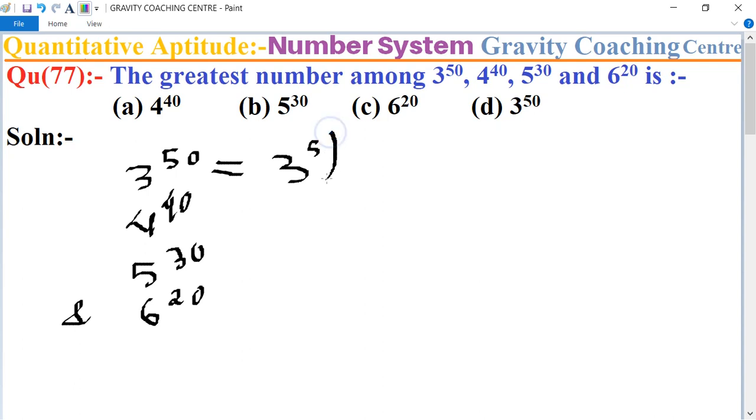3 to the power 50 can be written as 3 to the power 5, to the power 10. Since 3 to the power 5 equals 243, this becomes 243 to the power 10.